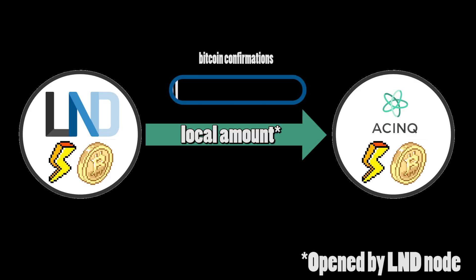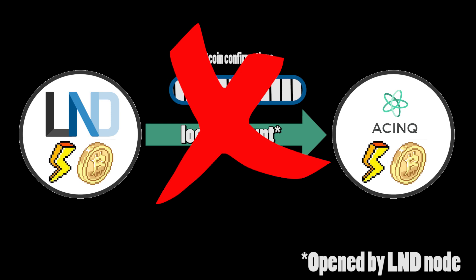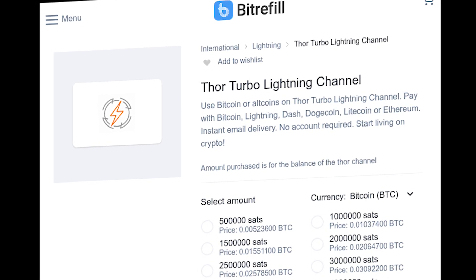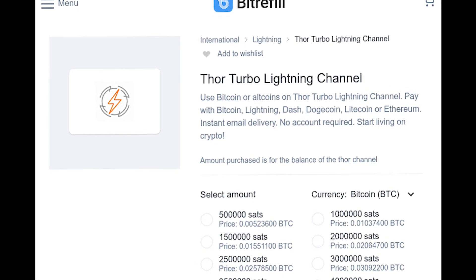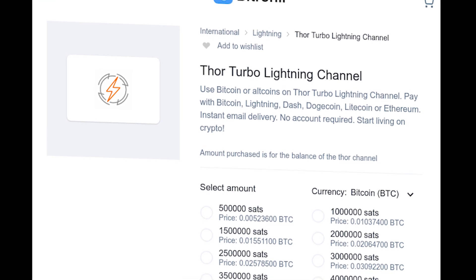Turbo channels — this one is easy. It's a channel in which parties, upon opening a new channel, don't need to wait the standard few confirmations after the initial opening phase to use it, saving almost an hour of time before the channel becomes usable. It's a way of speeding up onboarding of new users, but for some additional cost, and this service has to be ordered and paid for.